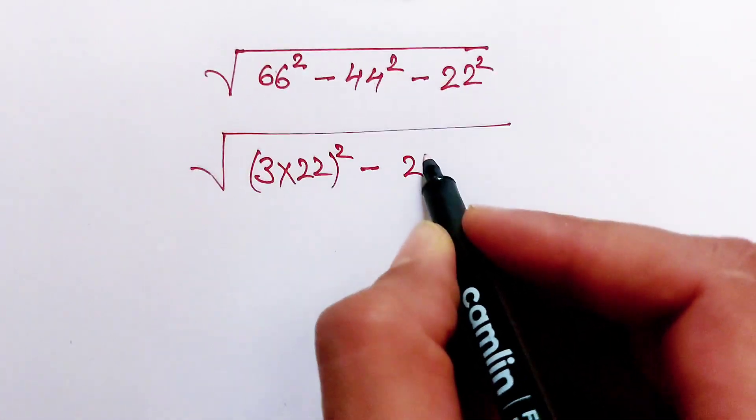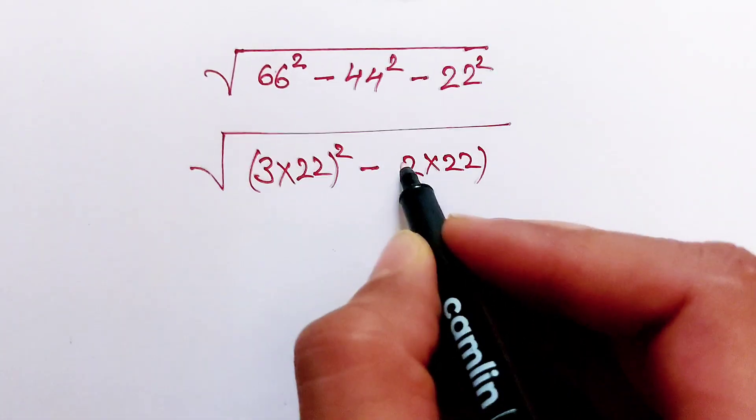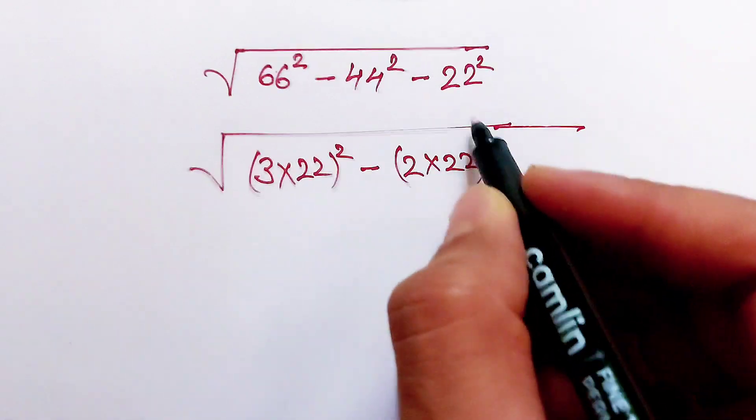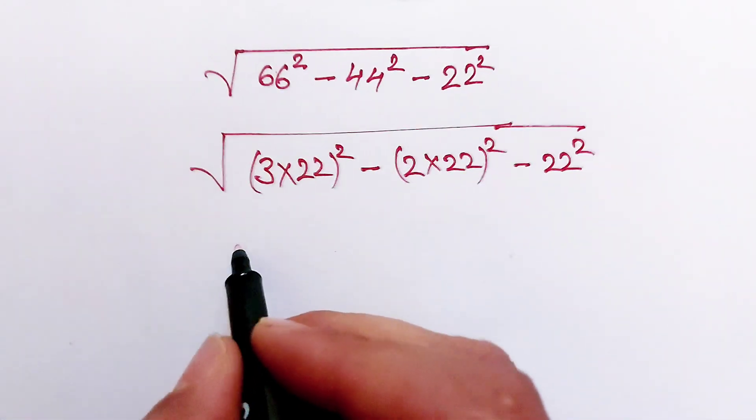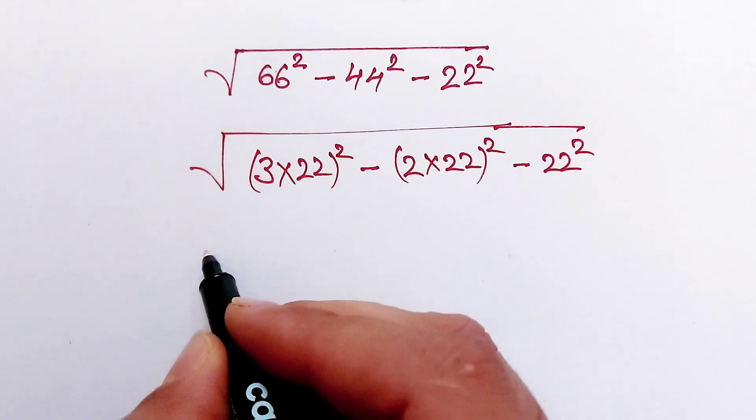Written as 2 multiply 22 whole squared, and this 22 squared as 22 squared. Now we know that this exponential property.